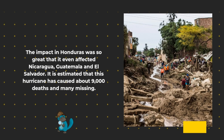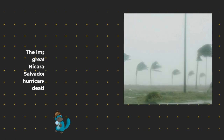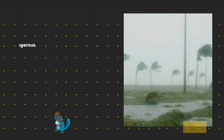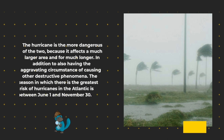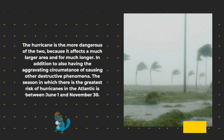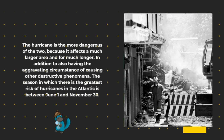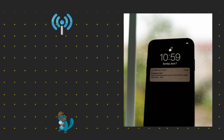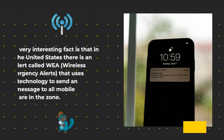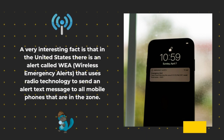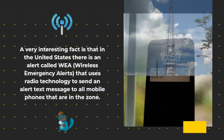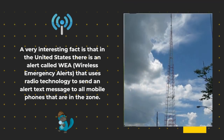The hurricane is the more dangerous of the two because it affects a much larger area for much longer, and also has the aggravating circumstance of causing other destructive phenomena. The season with the greatest risk of hurricanes in the Atlantic is between June 1 and November 30. A very interesting fact is that in the United States there is an alert called WEA — Wireless Emergency Alerts — that uses radio technology to send an alert text message to all mobile phones in the affected zone.